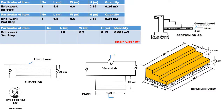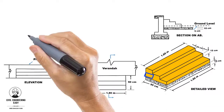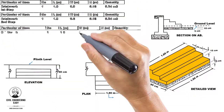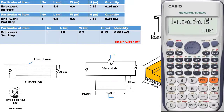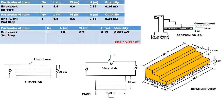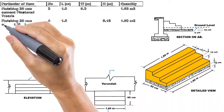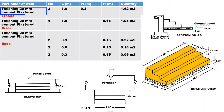For the brickwork in the third step: the length of brickwork is 1.8 meter, width is 0.3 meter, and height is 0.15 meter. The total brickwork in the third step is equal to 0.081 cubic meter. The total quantity of brickwork calculated step-by-step equals 0.181 cubic meter.